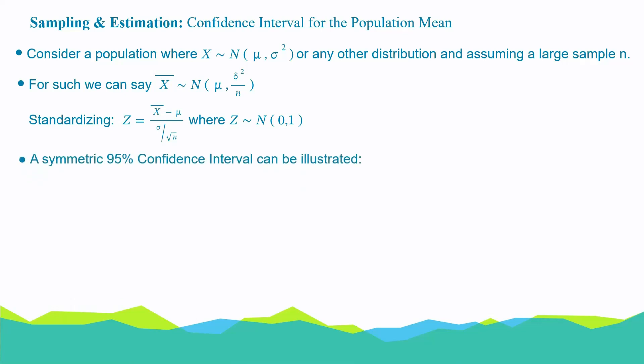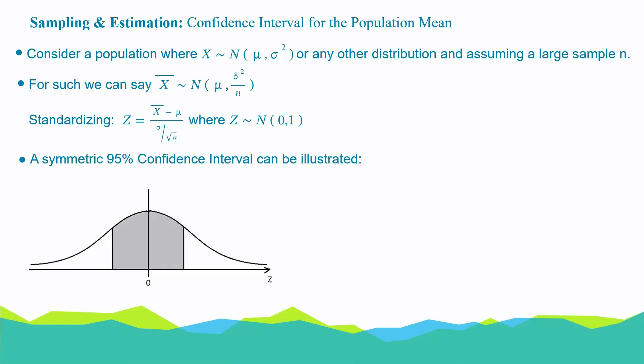Now, a 95% confidence interval can be illustrated by this graph. So, the shaded area takes 95% of the area under the graph. To make up 100%, there should be 2.5% on each tail, also considering symmetry here.